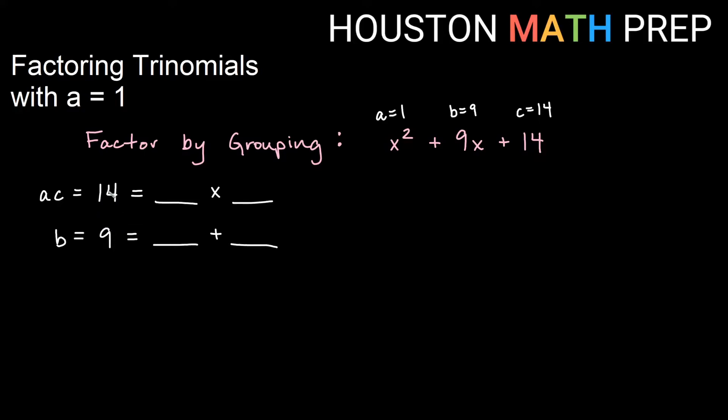So if you think about factors of 14 that will add to give us 9, probably pretty quickly we'll come up with 2 and 7. 2 times 7 would be 14, and 2 plus 7 is 9.